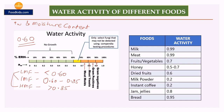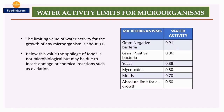Each food has its own water activity value. For example: milk is 0.99, meat is 0.99, fruits and vegetables are 0.97, honey is 0.5 to 0.7, dried fruit is 0.6, milk powder is 0.2, instant coffee is 0.2, jam and jellies are 0.8, and bread is 0.95. Various microorganisms like bacteria, yeast, and mold also have their own water activity requirements, which we will discuss next.